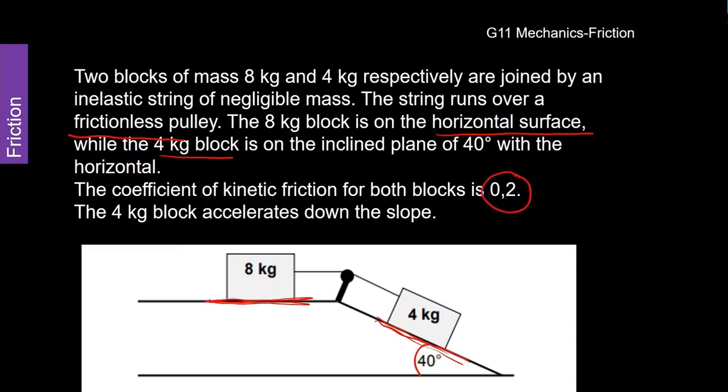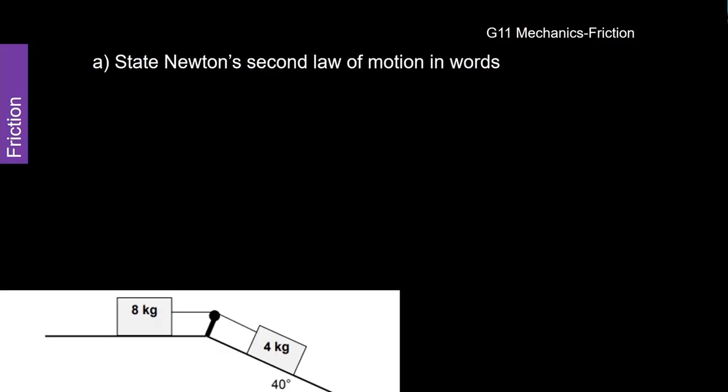And there is a coefficient of friction. And they tell us that it is for both blocks. And it is 0.2. And it tells us that this block accelerates. It is accelerating, okay? So there is an acceleration. What are they asking us to do? State Newton's second law of motion in words. I'm sure by now you know that. So I'm not going to go through that. But that is going to give us an indication of where they're going with the questions that they're going to ask us.